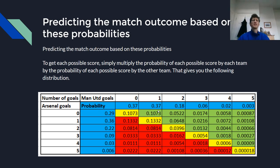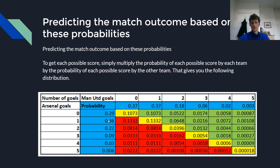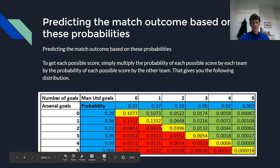So how can we predict the match outcome based on these probabilities? To get each possible scoreline, simply multiply the probability of each possible score by Arsenal by the probability of each possible score by Manchester United. That gives us a full distribution table. For example, the probability of a nil-nil draw is 0.29 multiplied by 0.37, which equals 0.1073 — so 10.73%. In the table, the yellow boxes are all the draws (nil-nil, 1-1, 2-2, 3-3), the green area is the probability of a Manchester United away win, and the red area is the probability of an Arsenal win.